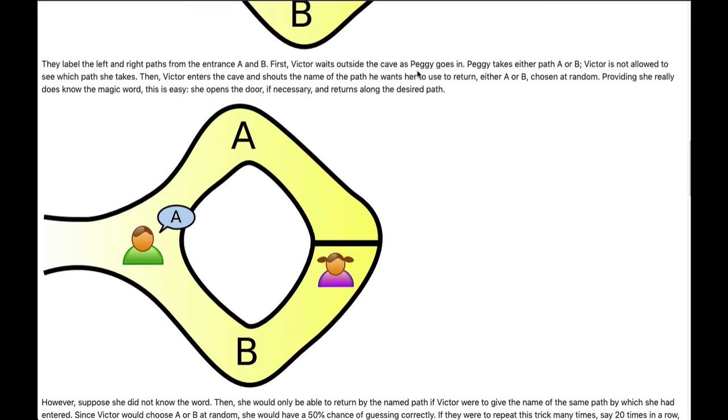So he does this a bunch of times. And each time he increases the likelihood of seeing her go in, she randomly picks A or B, he randomly says A or B, and she comes out that side.